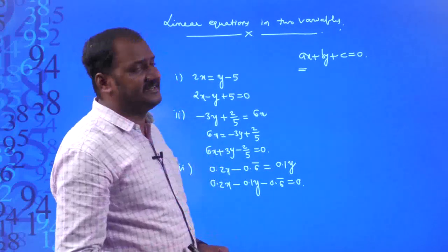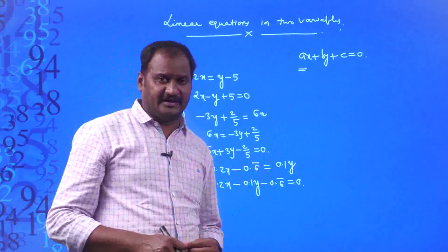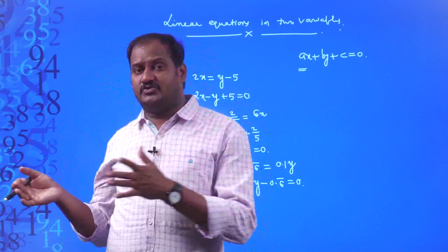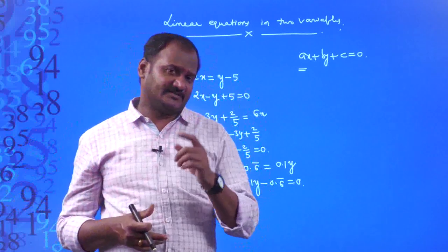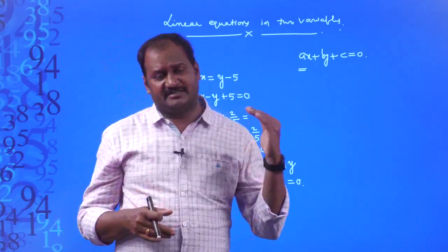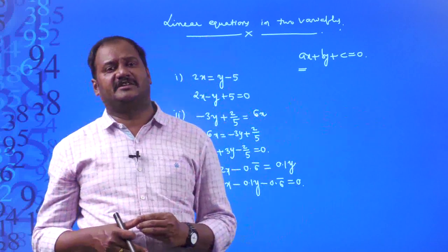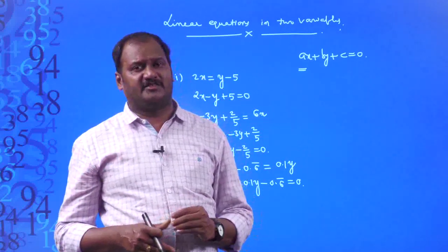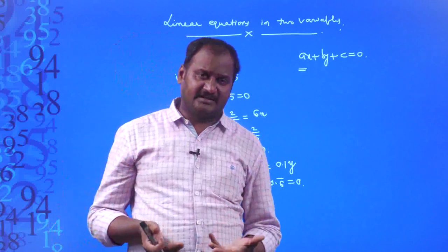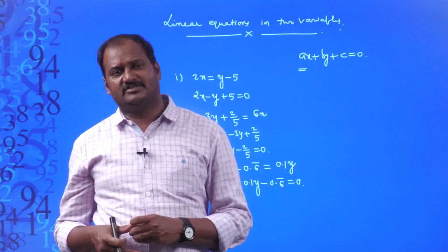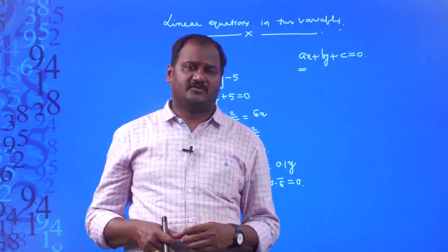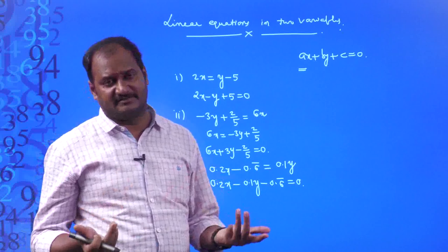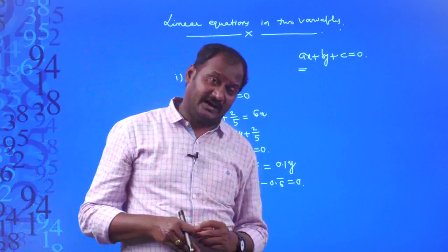How do we frame a linear equation in two variables? For example, the marks obtained by student A is x and by student B is y, and together they equal 100, so x plus y equals 100. Similarly, the cost of a bat and a ball, or pencils and pens — when you do not know one value, assign it a variable like x, y, or z, and you can simultaneously find the values.